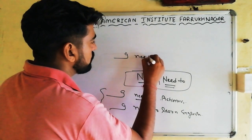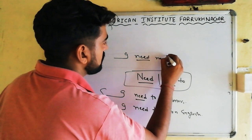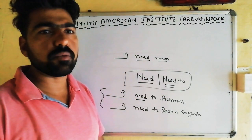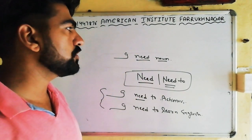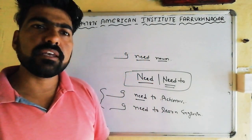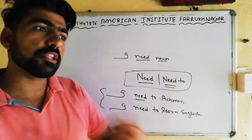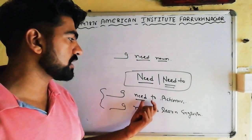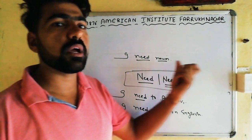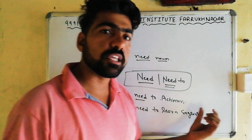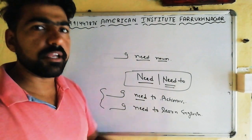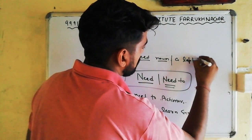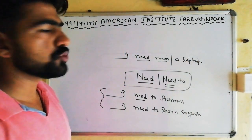For example: I need your pen, I need your mobile, I need a bike. And if you want to say you need to do something: I need to buy a laptop.